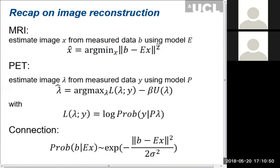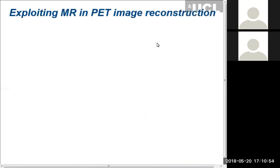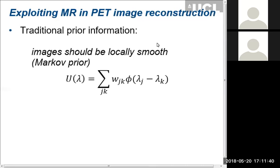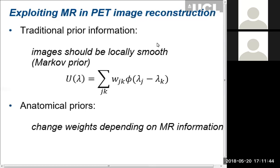We can do iterative algorithms in MRI and in PET, so can we use these things together? Traditionally, people have done a fair amount of work trying to use MRI information in PET reconstruction, because MRI has stunning anatomical contrast with the correct sequence, while PET images are poor in resolution. The prior information Andrew was showing involves taking differences between neighbors with some weight function. The obvious thing to do is to choose those weights based on MRI information — if there is a strong edge in the MRI image, it is likely an anatomical edge that should also appear in the PET image.